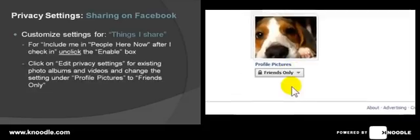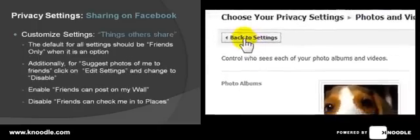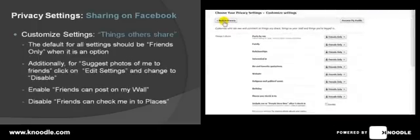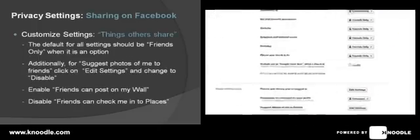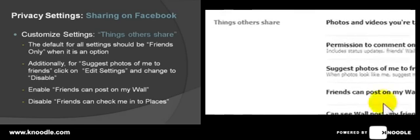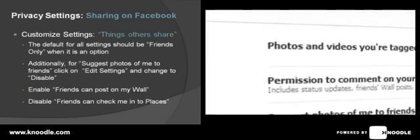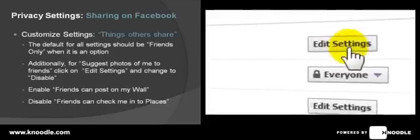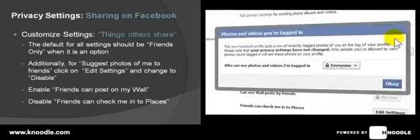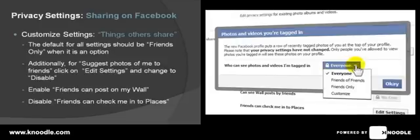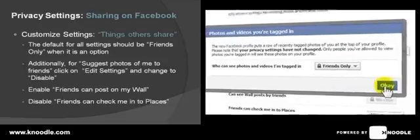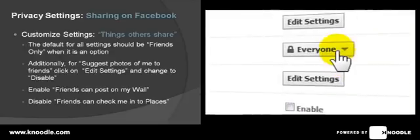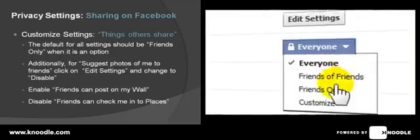Now go back to the settings — move up to this button and click on that. Scroll down the page and move on to the section headed 'Things Others Share.' The first item is 'Photos and Videos You're Tagged In' — click on 'Edit Settings,' a new box will open, click the button and change it from 'Everyone' to 'Friends Only,' then click OK. Then 'Permission to Comment on Your Posts' — change that from 'Everyone' to 'Friends Only.'